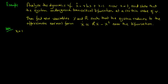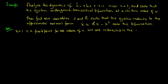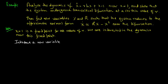Note that x = 1 is a fixed point for all values of r, and we are interested in the dynamics near this fixed point. We introduce a new variable u = x - 1 where u is small, so ů = x̊ = r·ln(1 + u) + u.